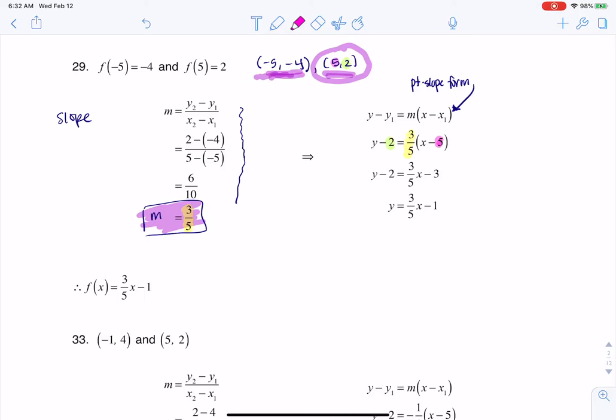And then it's a matter of me distributing that 3 fifths, solving for y, and then remembering at the end, now that we're past section 3.1, we want to use function notation. So that is my solution for number 29. Thanks so much. Bye.